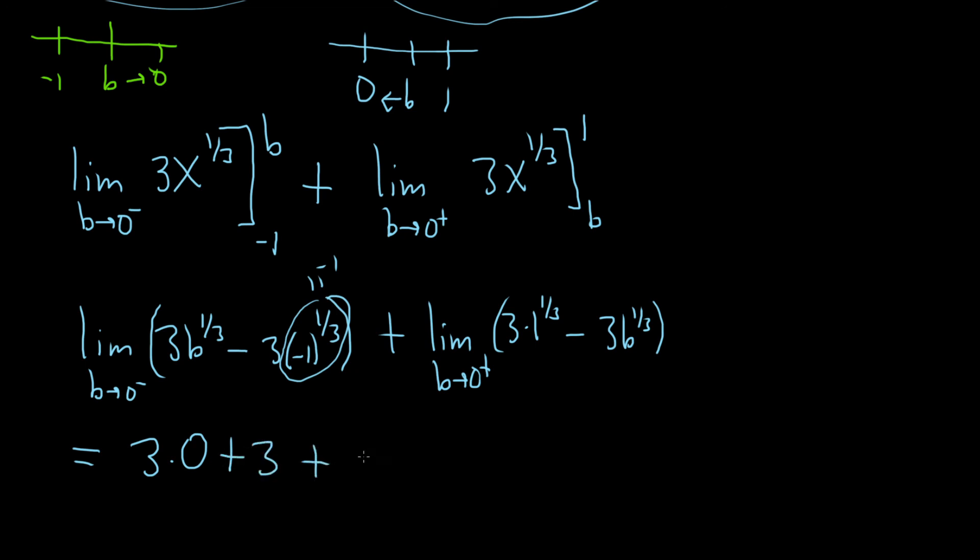Plus 3, because this is 1 so it goes away, minus 3 times 0. So we end up with 6. So the final answer is 6. I hope this video has been helpful.